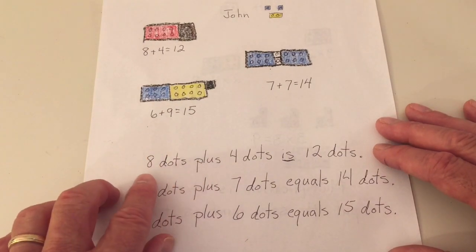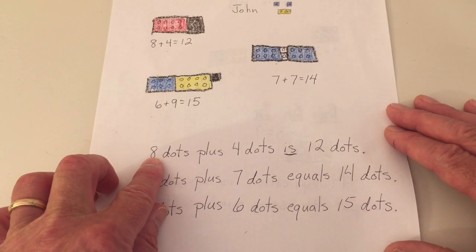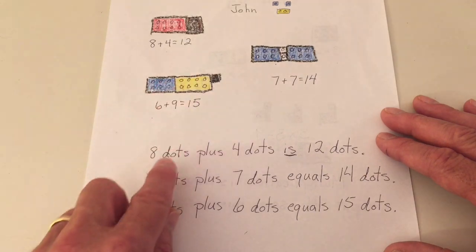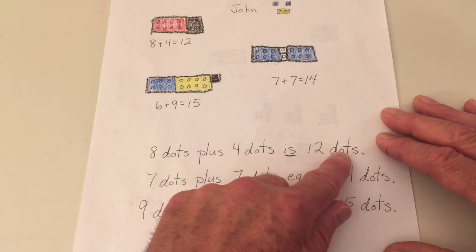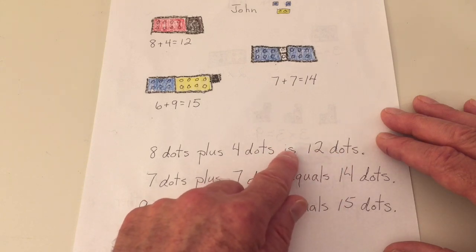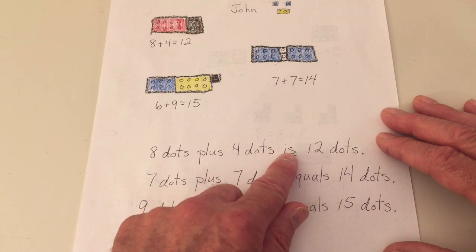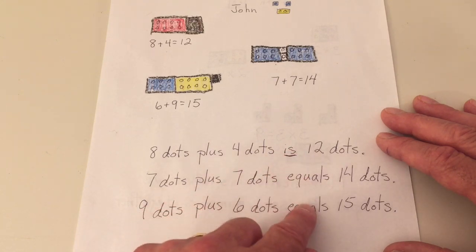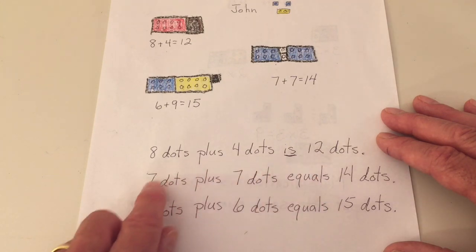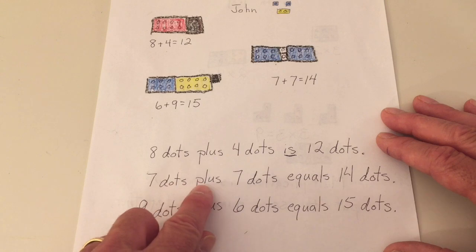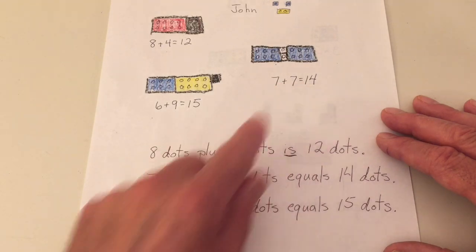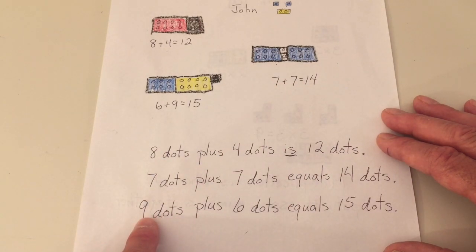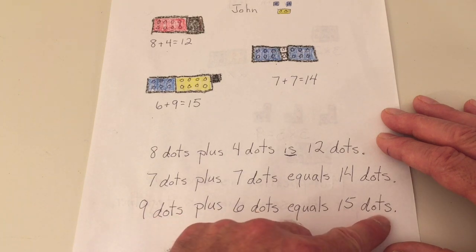And then I wrote what we did. I wrote down eight dots. Those are those little dots, right? Eight dots plus four dots is twelve dots. And twelve we could also say equals. So instead of putting is in these places down here, I put the word equals. So let's see how it reads. Seven dots plus seven dots equals fourteen dots. Seven plus seven. And then I wrote the other problem, the last one. Nine dots plus six dots equals fifteen dots.